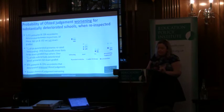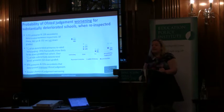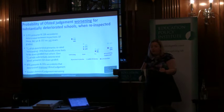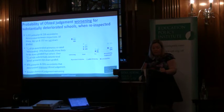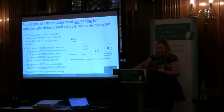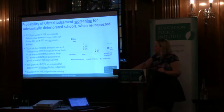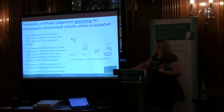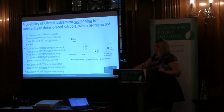Stepping back overall, 47% of primaries and 33% of secondaries that had deteriorated substantially in their academic performance actually improved their Ofsted judgment at the next inspection — that's 541 primaries and 68 secondaries. For secondary schools, there is a greater chance of judgments being downgraded in all cases, and a bigger difference between schools that were deteriorating according to value-added progress and schools that weren't. The pattern is most interesting for primary schools.